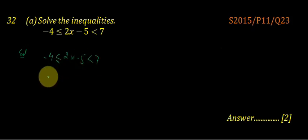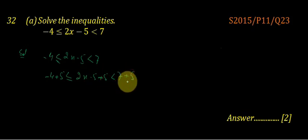So, we add plus 5 to each term. Plus 5 here and the 2x minus 5 plus 5 here and the 7 plus 5 here. So, all 3 places we add plus 5.